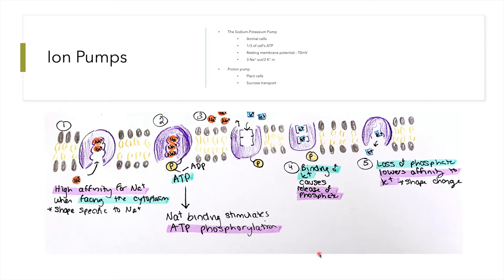The proton pump is a major pump in plants. It functions in transporting sucrose in plants by creating a proton motive force, pumping hydrogen ions against their concentration gradient. We will talk about this more in the next slide.